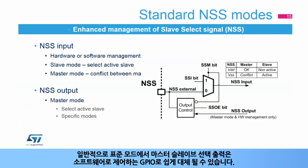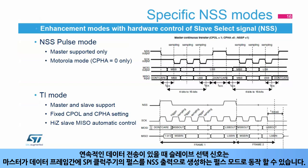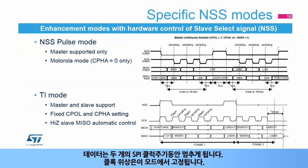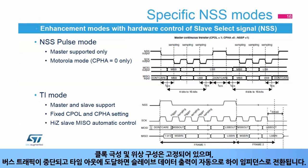Generally, in a standard mode, the master slave select outputs can be easily replaced by GPIOs under software control. There are a few enhanced modes when the slave select signal is under specific hardware control. The slave select signal can operate in a pulse mode where the master generates pulses on the NSS output signal between data frames for a duration of one SPI clock period when there is a continuous transfer of data. The data is then interleaved by two SPI clock periods, and the clock phase is fixed in this mode. Another enhanced mode is the TI mode where the data flow is synchronized by the NSS pulses provided by the master on the last bit of data. The clock polarity and phase configuration is fixed and the slave data output is automatically switched into high impedance when the bus traffic stops and on a specific configurable timeout.